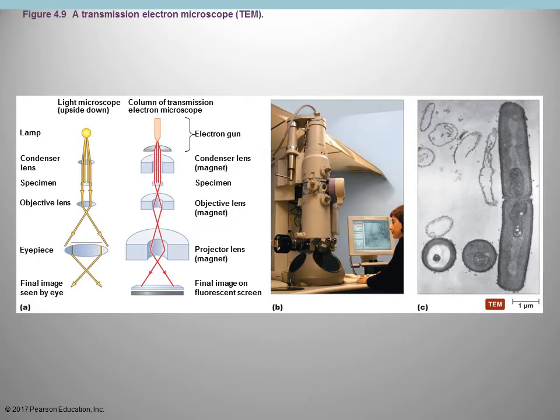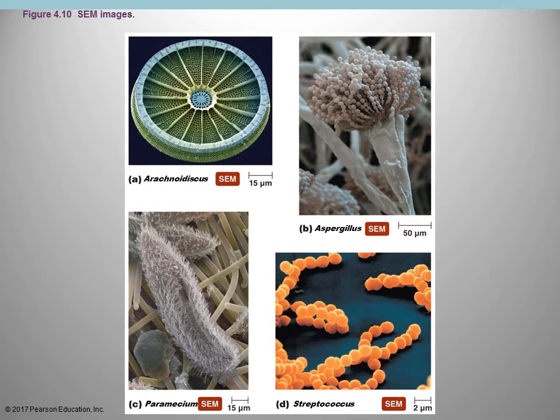With a transmission electron microscope, you prepare the sample by taking slices of it, allowing you to see internal structures in 2D. The scanning electron microscope provides more of a 3D image of the outer surface. For example, picture D shows Streptococcus bacteria connected in a chain, and picture B shows Aspergillus fungus with individual spores. However, with the scanning electron microscope you do not see internal structures.